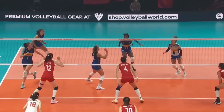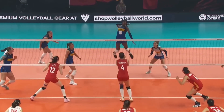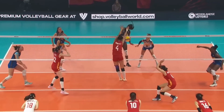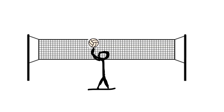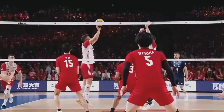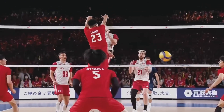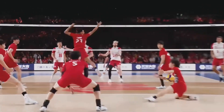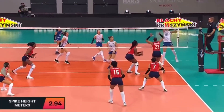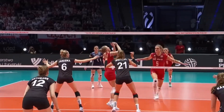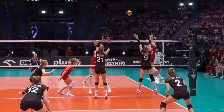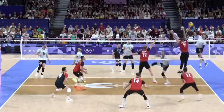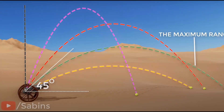If I had to describe setting from a scientific perspective it would be as simple as moving the ball from point A to point B. Now if you want to become a good setter then obviously just getting the ball to point B will not be enough. You also need to have some versatility in your game and adjust the path of the ball depending on your teammates and the type of set they need.